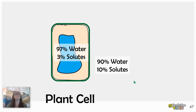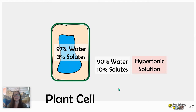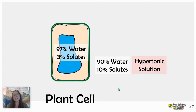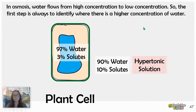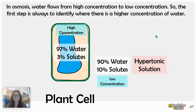So you want to think about where is the higher concentration of water. Inside the cell is 97% water and 3% solutes, while on the outside it's 90% water and 10% solutes. There's a higher concentration of solutes and less water on the outside. So that solution surrounding the cell is a hypertonic solution. Since water concentration is higher inside (97%) than outside (90%), water is going to leave this cell.